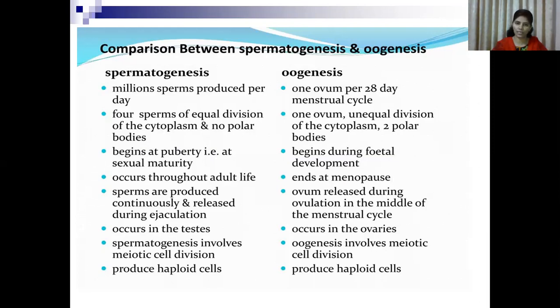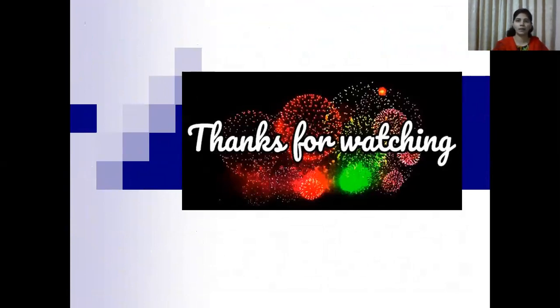Both spermatogenesis and oogenesis involve meiotic cell division, and both gametes produced are haploid, so that when these two haploid gametes fuse, a diploid zygote is formed. So we have covered the full process of gametogenesis including both spermatogenesis and oogenesis. Oogenesis is a very important first step in developmental biology, as development begins with the formation of gametes. I hope you now understand the process of oogenesis in detail. Thank you.